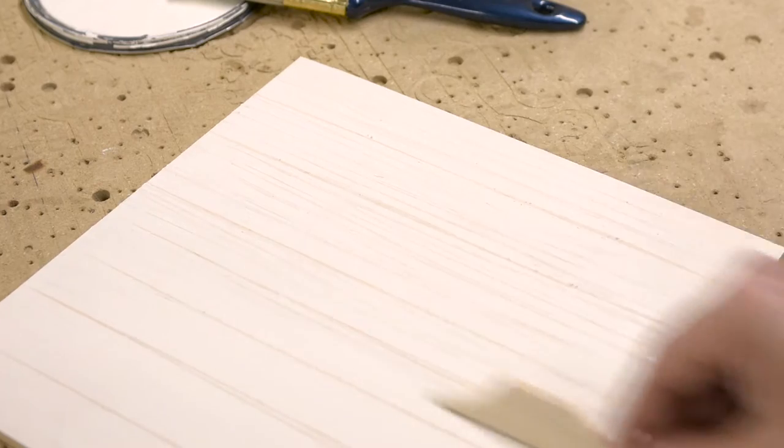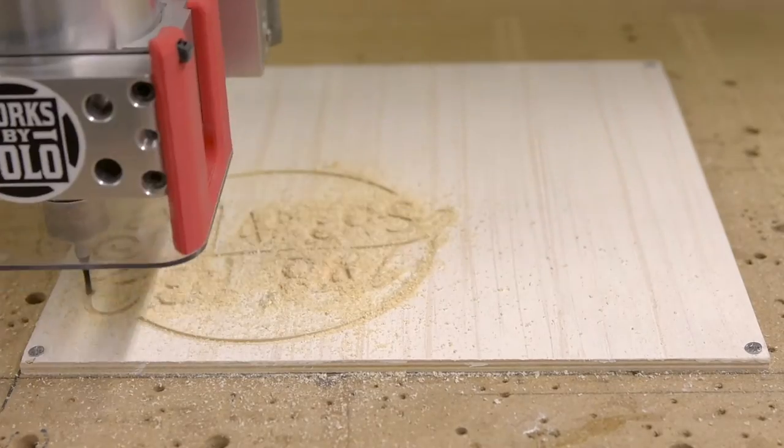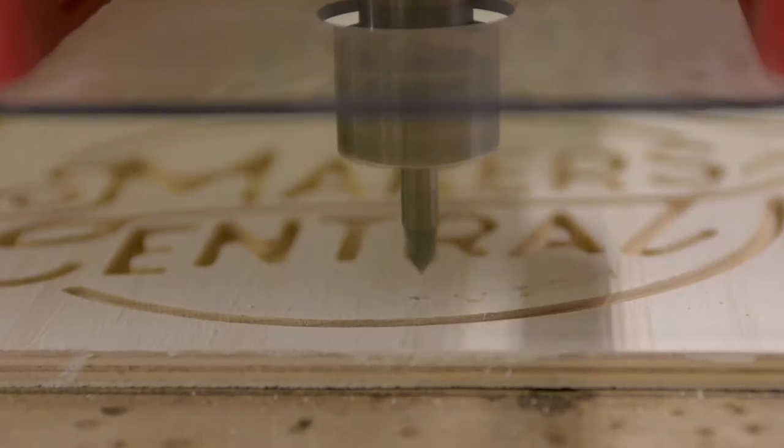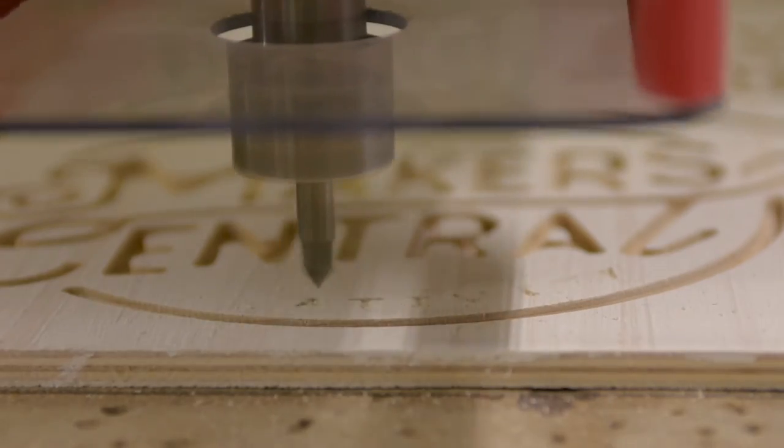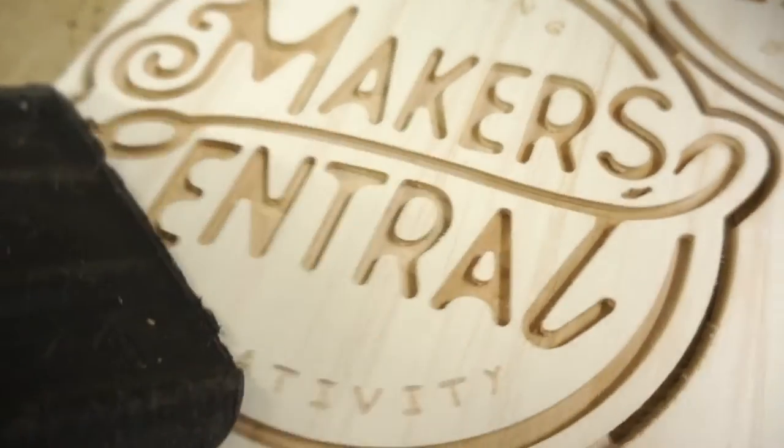I wanted to stay as true as practical to the original Maker Central logo. So I started with distressed white paint and then carved through it. All the parts can be cut from four 300 by 300 millimeter sheets, including two logos.